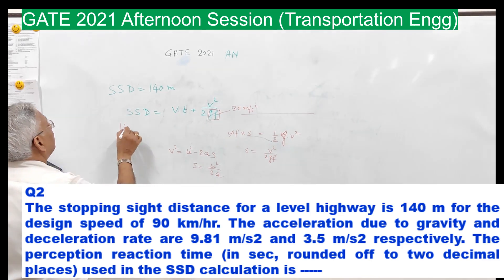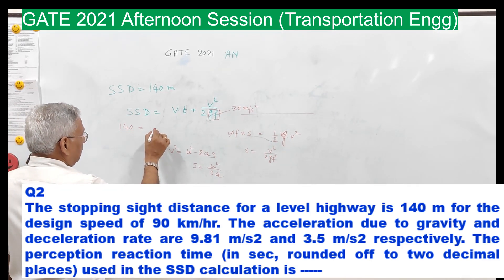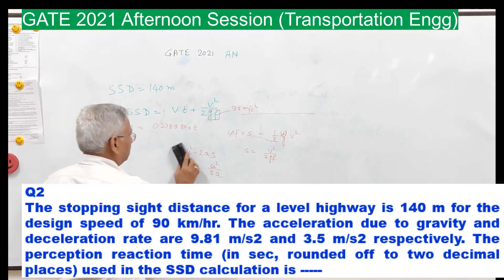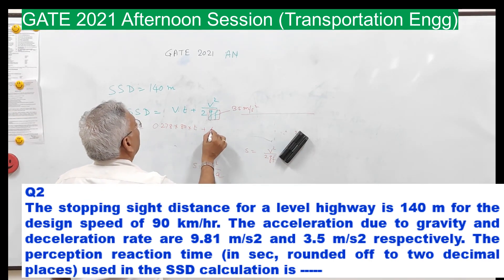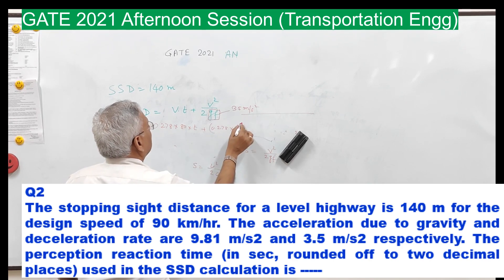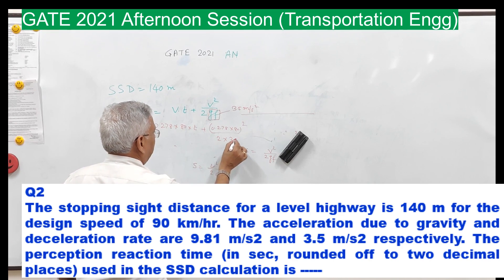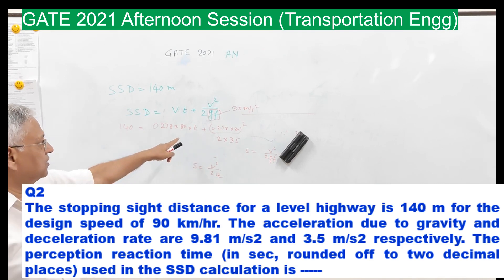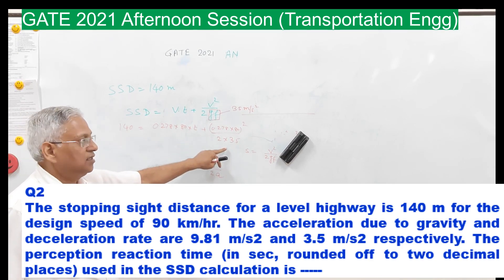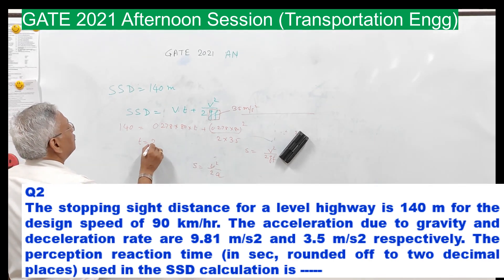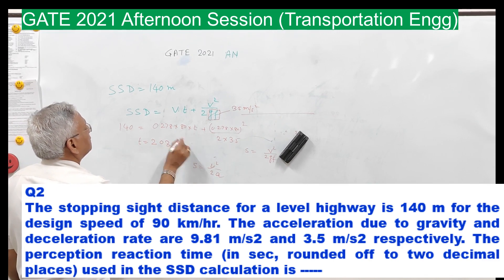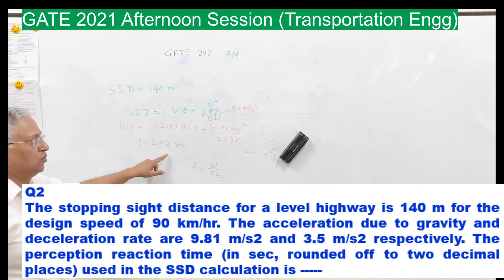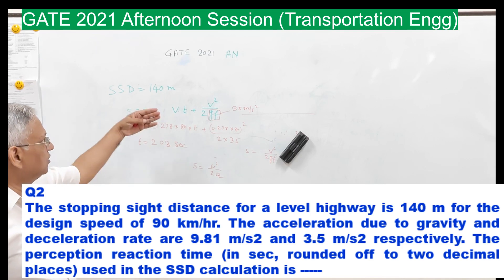Putting the values in: 140 equals 0.278 into 80 into T plus 0.278 into 80 squared upon 2 into 3.5, and solving for T gives the reaction time. The perception-reaction time T will be 2.03 seconds, rounded to 2 decimal places. That is the answer to question number 2.